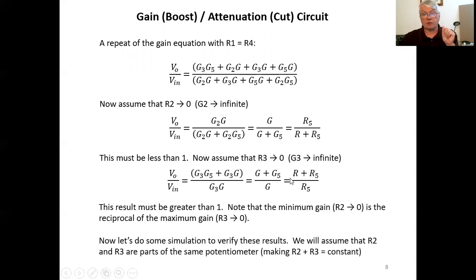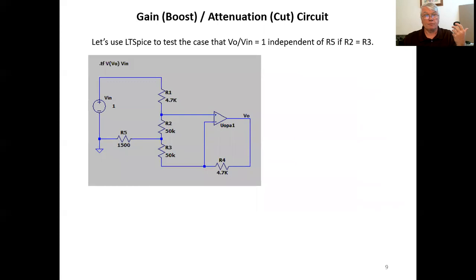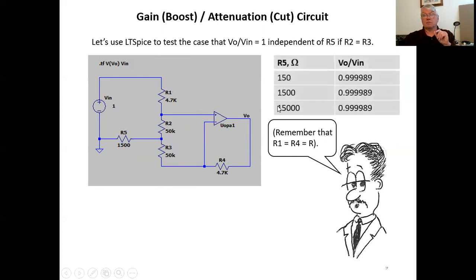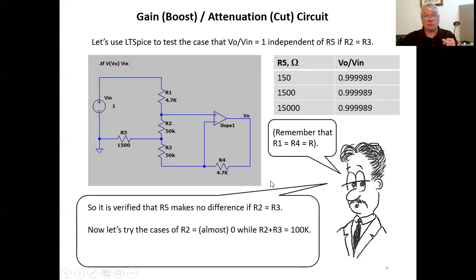So let's do some simulation to verify these results. We're going to assume that r two and r three are parts of the same potentiometer, which makes the sum of r two and r three is constant. Let's use LT SPICE, freeware version of the industry standard circuit analysis package SPICE. Let's use LT SPICE to test the case that v out to v one or v in is one independent of r five if r two and r three are the same. Now just remember r one and r four are equal. I'm assuming that condition is true in all of these analyses. And running this simulation, the transfer function v out to v in calculated by LT SPICE for 150 ohms, 1500 ohms and 15,000 ohms for r five, the voltage gain is one and it doesn't change. So that seems to work.